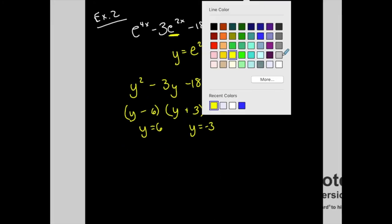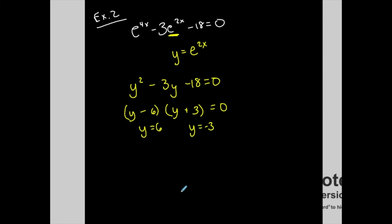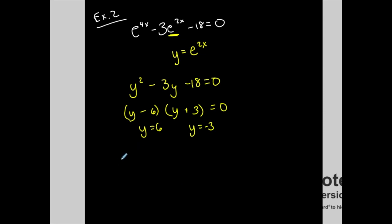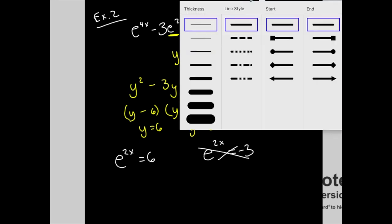But again, don't forget that we started with an exponential equation. So we have to go back to substitute y and replace y with e^(2x) = 6 or e^(2x) = -3. But again, I'm never going to take a positive value, raise it to an exponent and get a negative outcome. So this is out. I can only solve this one. My solution will come from this.